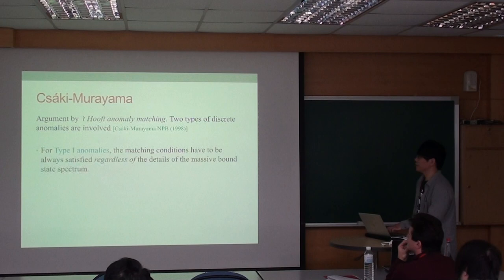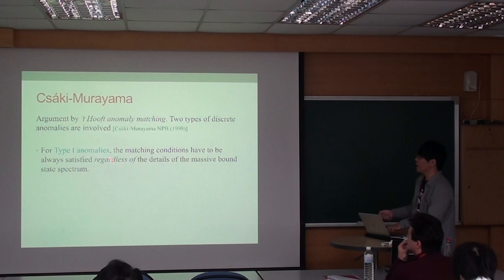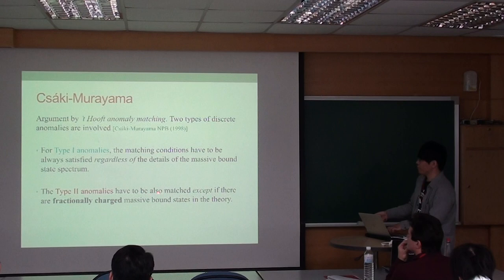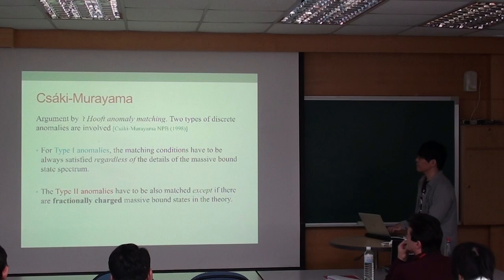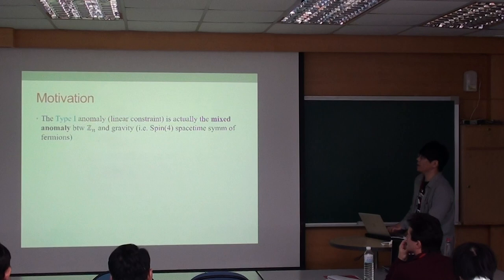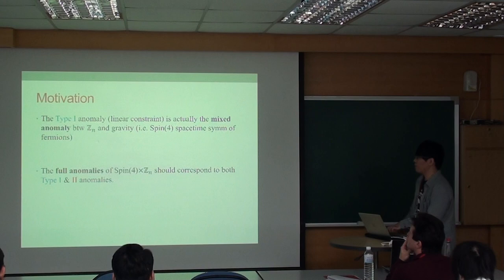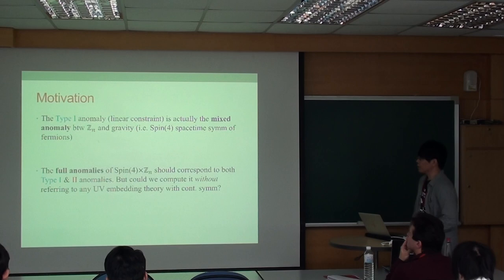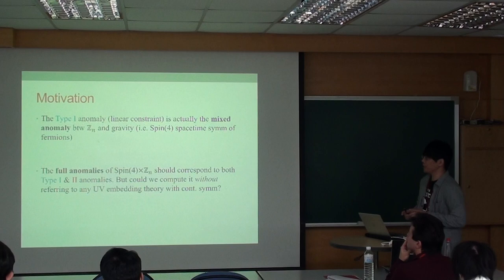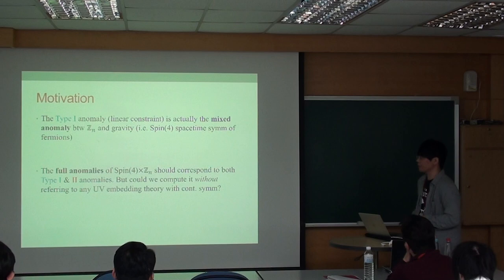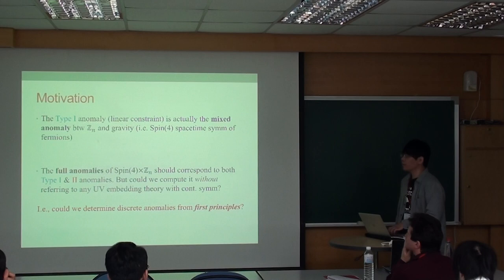Two types of discrete anomalies are involved. Type one anomalies, which are essentially the linear anomalies - the matching conditions have to be always satisfied regardless of the details of the mass spectrum. On the other hand, type two anomalies have to be also matched except if there are fractionally charged massive bound states. As I mentioned, type one anomalies are actually the mixed anomalies between ZN symmetry and gravity, which is Spin(4) symmetry group, the spacetime symmetry group of fermions. The full anomalies of these symmetry groups should correspond to both type one and type two anomalies. Here is the question: could we compute the full anomalies without referring to any UV parent theory with continuous symmetry such as U(1)? That is, could we determine discrete anomalies from first principles?